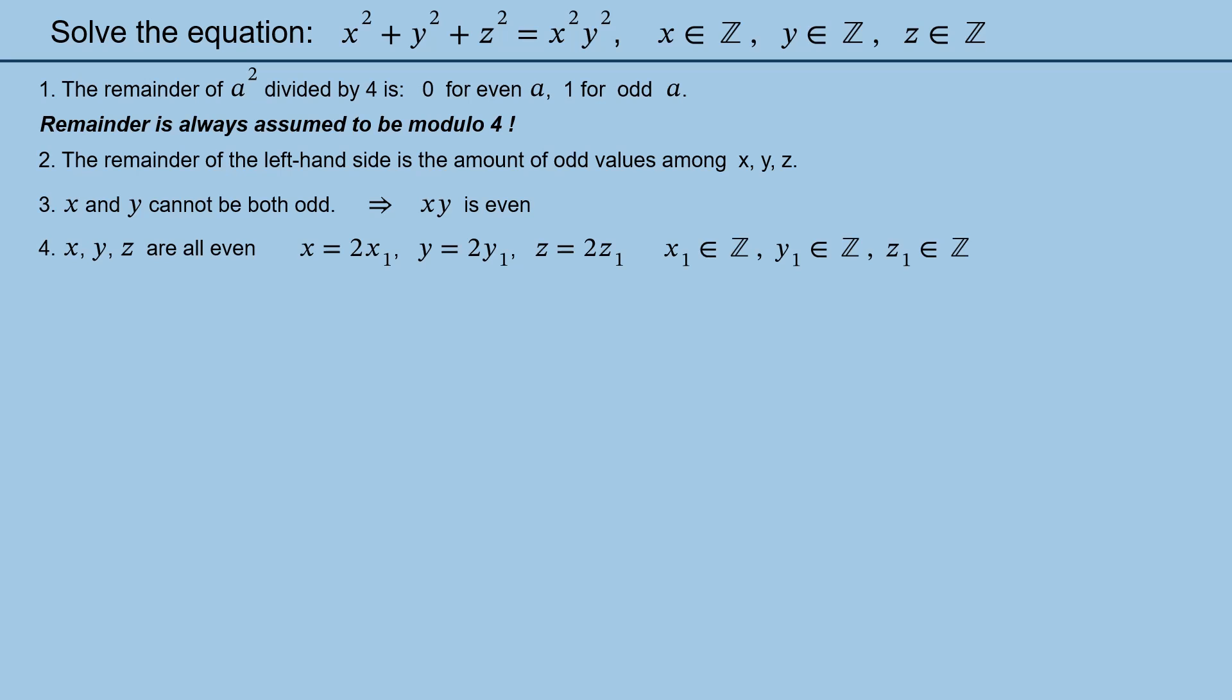And we substitute the expressions for x, y, and z into the given equation. The obtained equation can be reduced by 4, and we get an equation very similar to the original one. So statement 2 applies to the new equation as well. Only instead of x, y, and z we should use x₁, y₁, z₁. However, the new equation shows straight away that the right-hand side is divisible by 4. This means that the left-hand side of the new equation along with its right-hand side has remainder 0. So according to statement 2, x₁, y₁, and z₁ are all even.